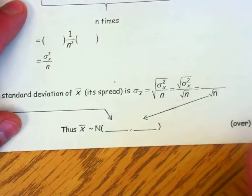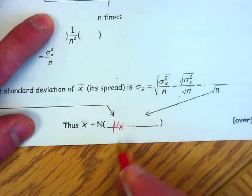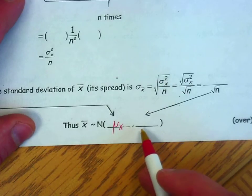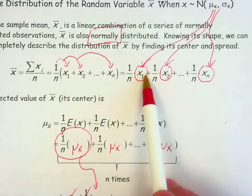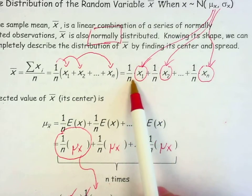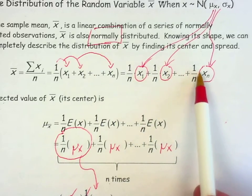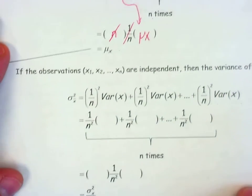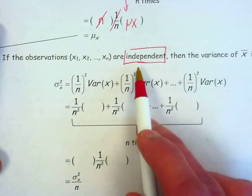So the center of the sampling distribution — the center of all the x̄'s — is the truth: just the old mean of x. The sample means are distributed normally and their mean is the same as the mean for x, truly the middle of the normally distributed x's. Now I need to find the standard deviation. A mean is a combination of normally distributed variables, so I can find the variance of all these terms. Since variance is a squared quantity, I have to square the 1 over n as well. Because the observations are independent, I can add the variances.